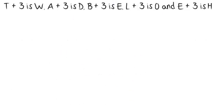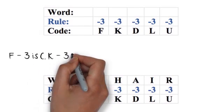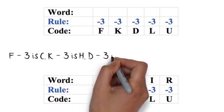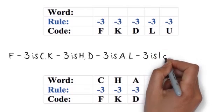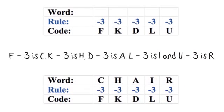The code for TABLE is WDEOH. Sometimes you'll be asked to find the word from the code instead of finding a code for the word. What is the word for FKDLU? This is the opposite of what we've just done, so we have to reverse the rules. This means that plus three will be minus three. Write down the code and the rule above it. Word — Rule: minus three. Code: F K D L U.